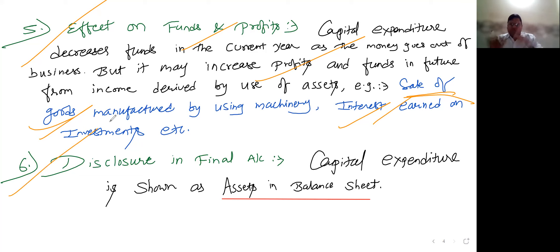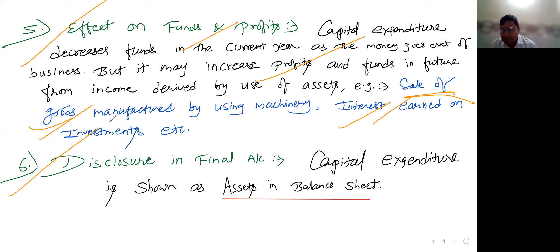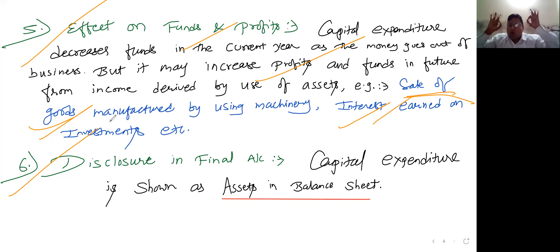Disclosure in financial accounts: capital expenditure will be disclosed in the balance sheet on the asset side. This capital expenditure is a big expenditure — it creates an asset. Assets are shown on the balance sheet asset side. So disclosure in financial accounts: capital expenditure is disclosed in the balance sheet asset side.